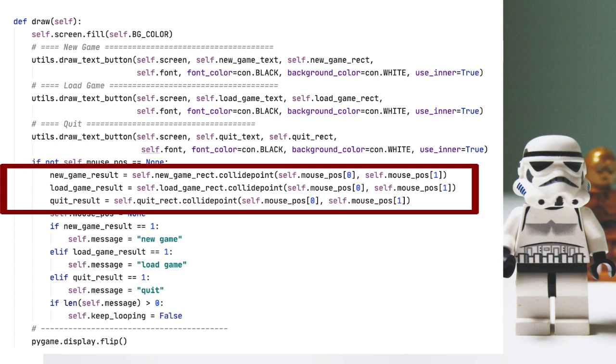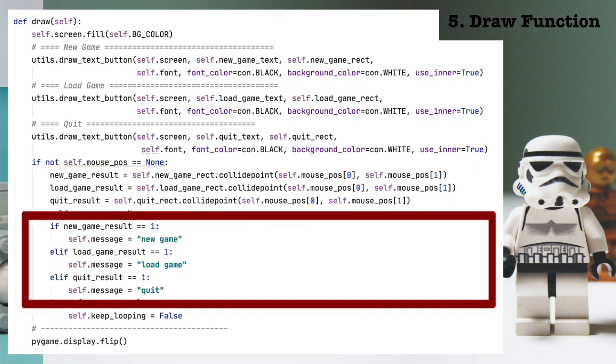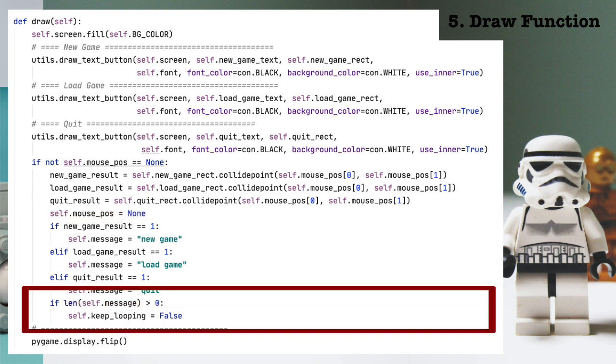And that works the same obviously for load game result and quit result. We use collide point to tell us whether a given point is inside the indicated rectangle. We now reset the mouse position to none, and then figure out whether a button was pressed, and if so, which one. And note, like I said before, a person can click the window without clicking a button. Depending upon which button was pressed, we figure out the correct message, new game, load game, or quit. Once the message is set, we set keep looping to false because we want to exit the dialog.